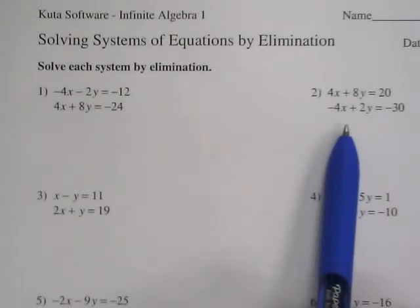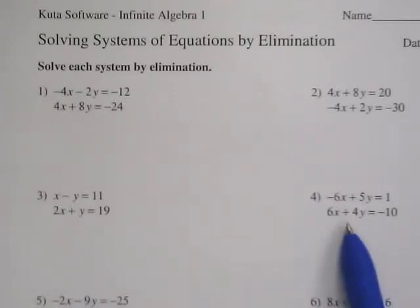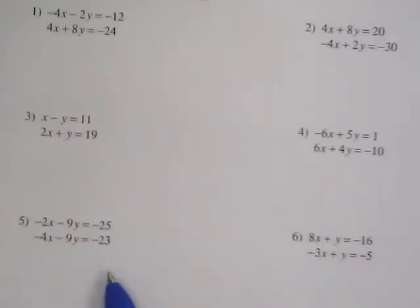What about number 3? The y can be eliminated. What about 4? The 6. I meant the x. The x term. What about 5? Both. Almost the y, but they're both negative 9y. We need to make one of them a positive 9y.